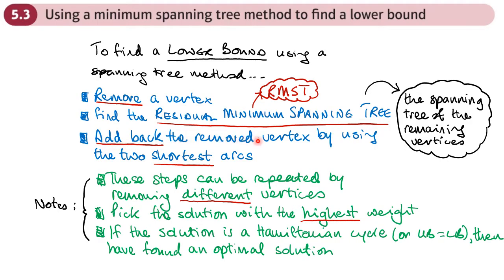Then what we do is we add back the removed vertex using the two shortest arcs — the two shortest arcs that are connected to the vertex that we removed — and add it back into the minimum spanning tree, our RMST. The weight of this network is going to be the weight of the RMST plus these two shortest arcs from the removed vertex.